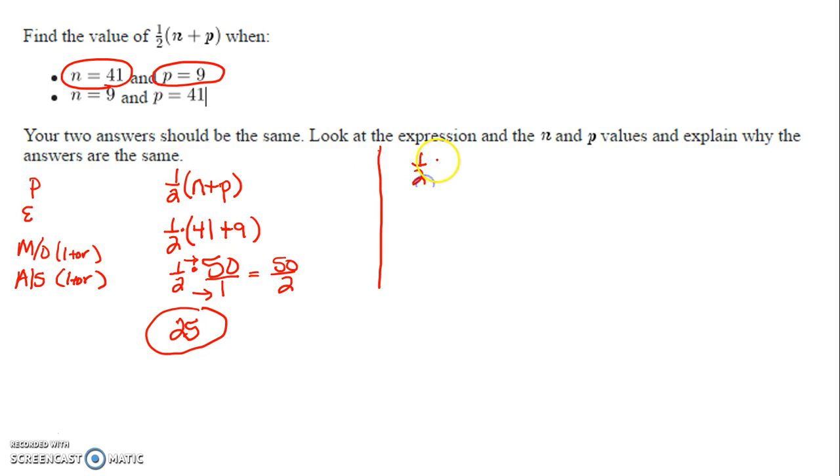Then they want us to take the same expression, 1/2 times the quantity (n+p). But this time they say let n be 9 and let p be 41. So we have 1/2 times the quantity (9+41).